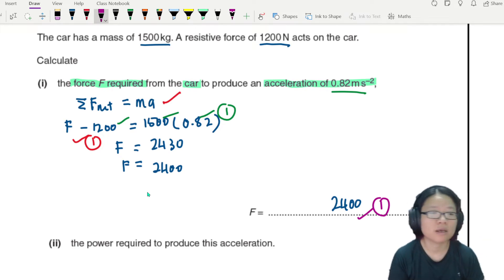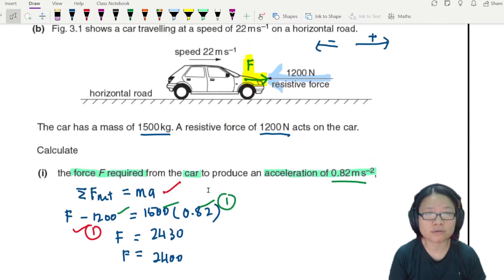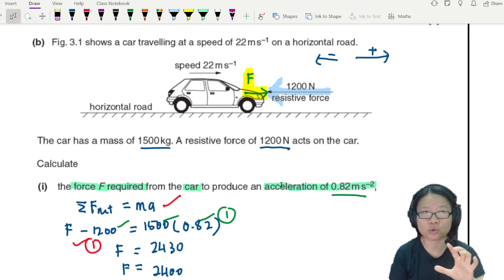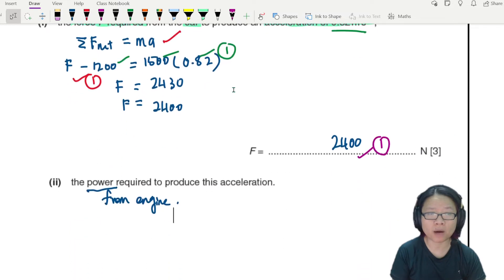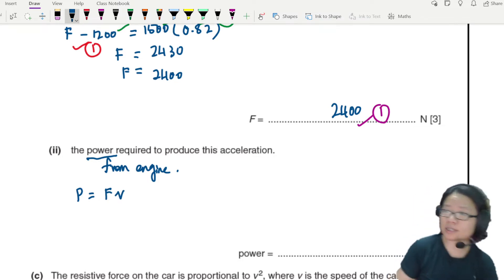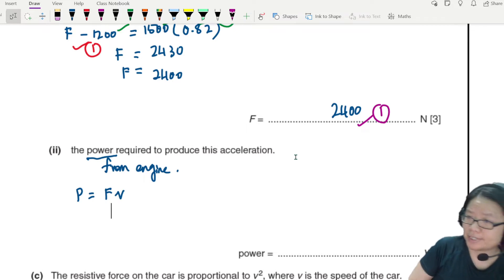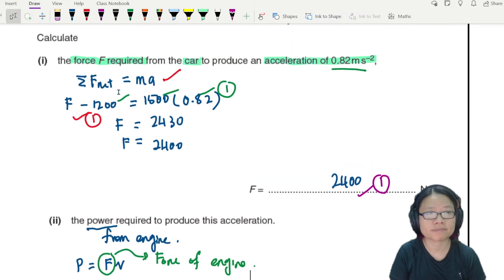Now part two: power required to produce the acceleration. This power is from the engine and this car engine is going to produce an acceleration of 0.82 in this context while the car is traveling at 22 meter per second at that point in time. You could think about power P as equal to FV. Some of you may be thinking: is there a conversion of energy? Yes there is, we'll talk about that a bit later. But right now if you want to use P equal to FV you can, just make sure you don't simply go and take different forces. This F must be the force of the engine.